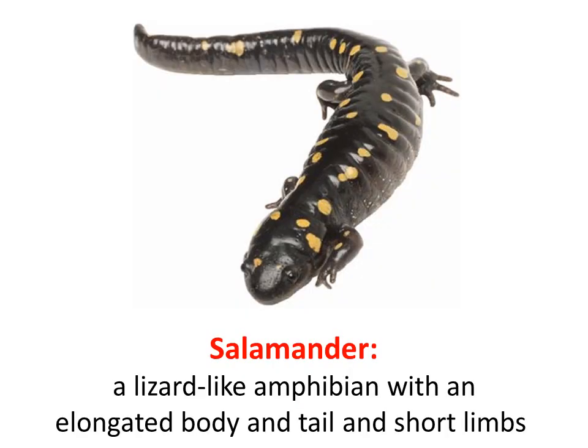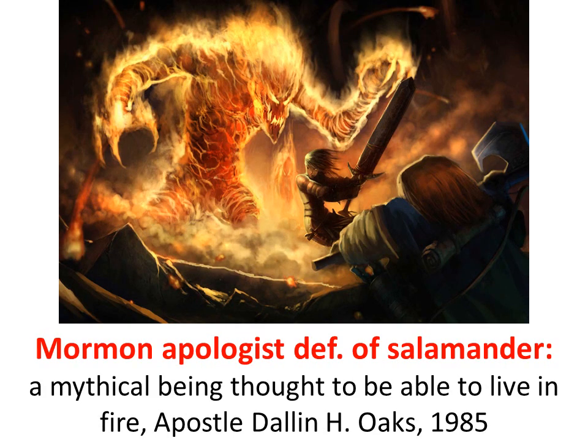Back around 1980, there was a guy named Mark Hoffman who was coming up with some forged documents. In one of those documents, he said that when Joseph Smith opened up the box where the golden plates were, a salamander jumped out and became a man. This became kind of a controversial document for the church. The word salamander means, in the common sense, a lizard-like amphibian with an elongated body and tail and short limbs. But since the word salamander was controversial, Dallin H. Oaks wanted to emphasize another definition: a mythical being thought to be able to live in fire. Definitely not the common definition, but it maybe got a little of the heat off the church's back.